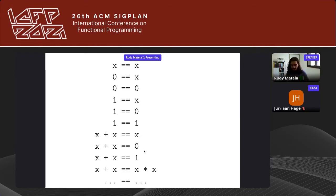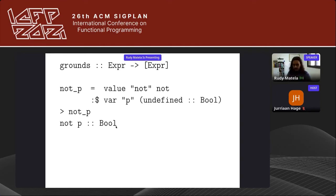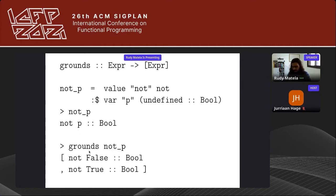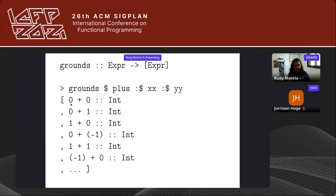Let's look at the grounds function, which takes an expression containing variables and returns a list of ground expressions where variables have been replaced by actual values. For example, grounds applied to (not p) where p is a variable returns [not False, not True]. Grounds applied to (plus x y) returns [0+0, 0+1, 1+0, 0+(-1)], etc. We can generate those values using a property-based testing library such as QuickCheck, LeanCheck, or Feat.